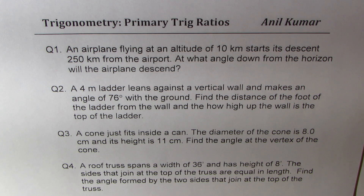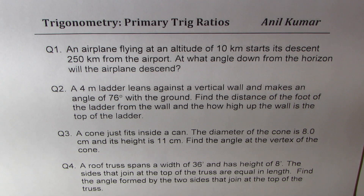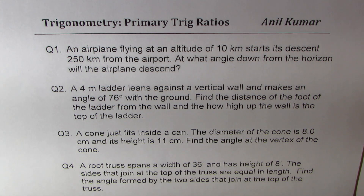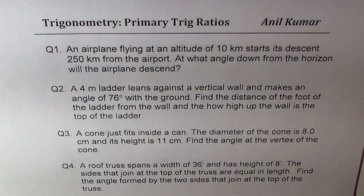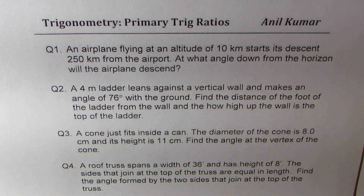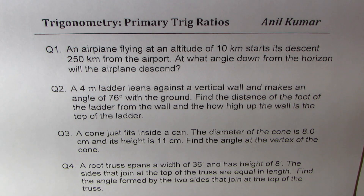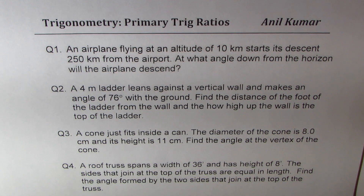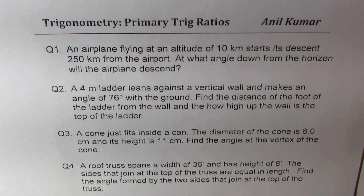You can also pause the video, answer these questions while I'm reading them, and then look into my suggestions. Question number three: a cone just fits inside a can. The diameter of the cone is 8 centimeters and the height is 11 centimeters. Find the angle at the vertex of the cone. Question number four: the roof truss spans a width of 36 feet and has a height of 8 feet. The sides that join at the top of the truss are equal in length. Find the angle formed at the two sides that join at the top of the truss.